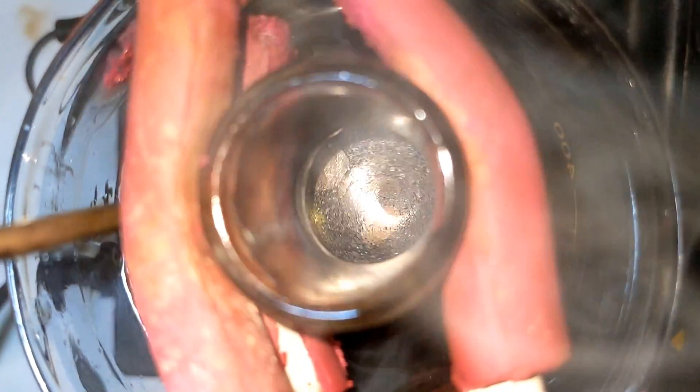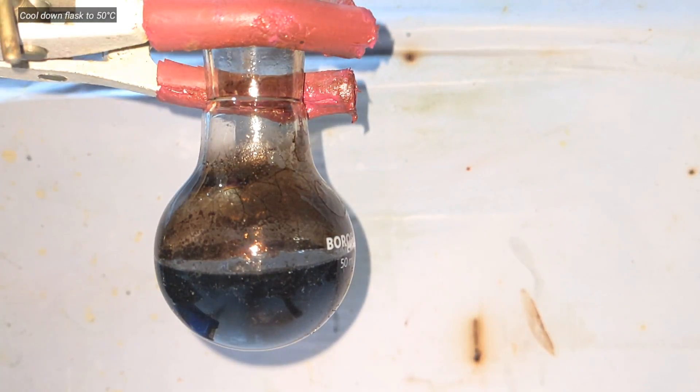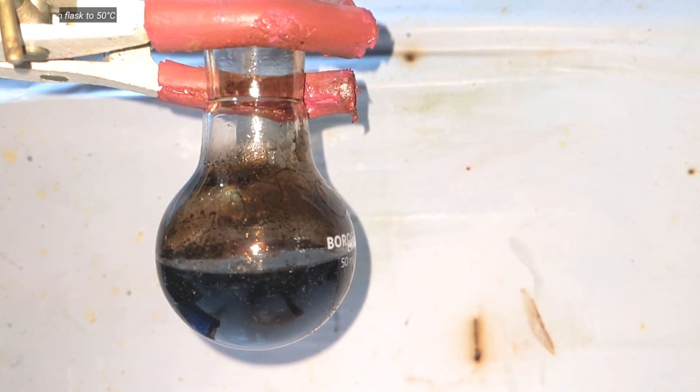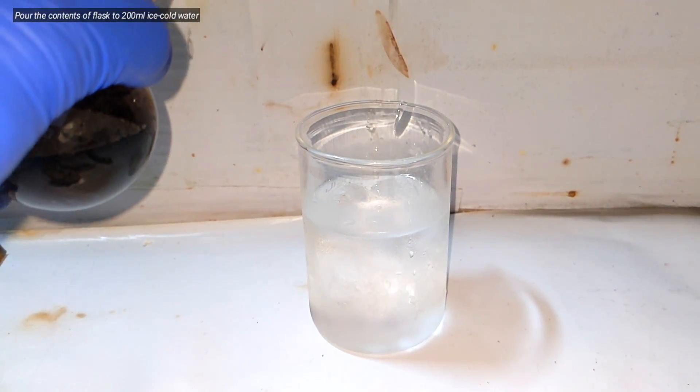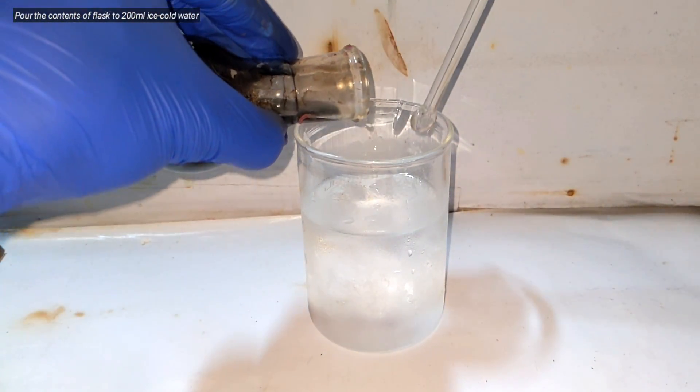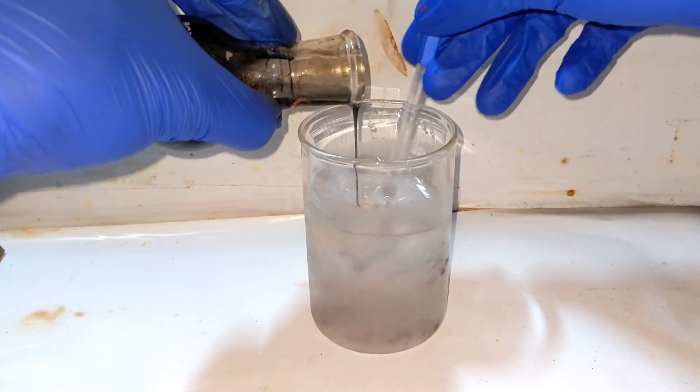After five hours, the oil bath was removed and the flask was allowed to cool to 50 degrees Celsius. Then the contents of the flask was poured directly into 200 milliliters of ice cold distilled water with constant stirring.